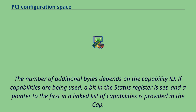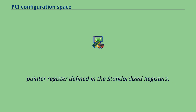The number of additional bytes depends on the capability ID. If capabilities are being used, a bit in the status register is set, and a pointer to the first capability in a linked list is provided in the CAP pointer register defined in the standardized registers.